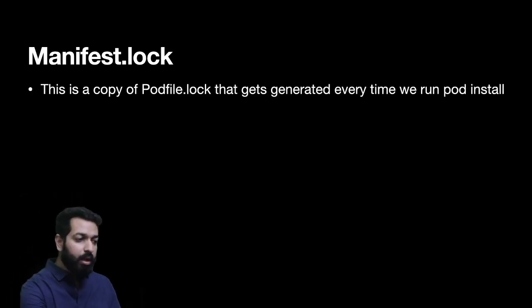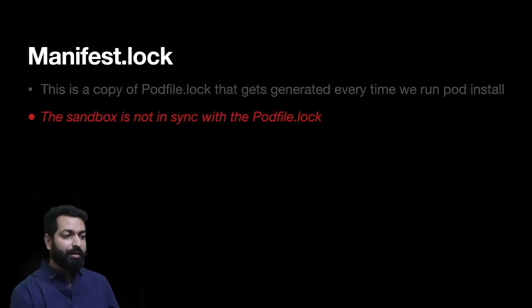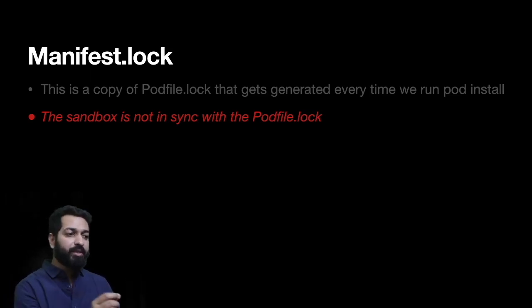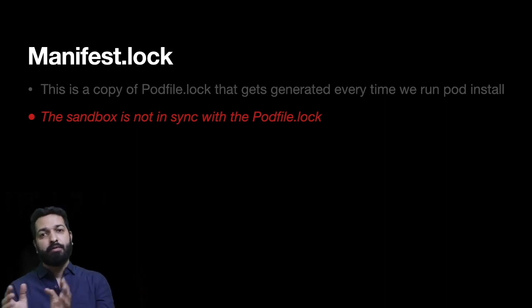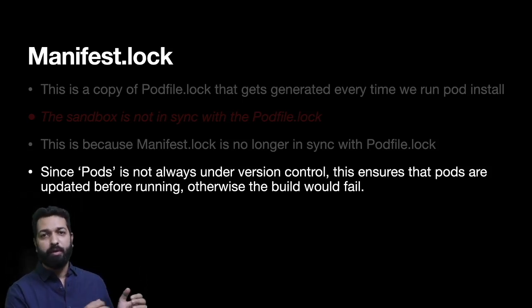Now let's understand Manifest.lock. This is the file which ensures that you have the exact same versions of pods as mentioned in your Podfile.lock. It is a copy of Podfile.lock generated whenever you run pod install. You may have seen the error 'the sandbox is not in sync with the Podfile.lock' — this error occurs because the Manifest.lock file is not in sync with Podfile.lock. Because pods are not always under version control, this file ensures you have the versions mentioned in Podfile.lock.